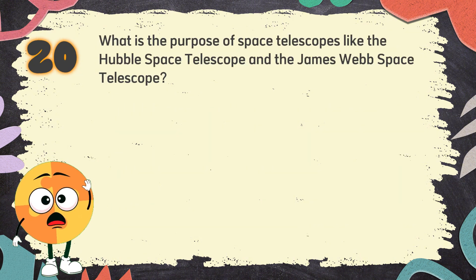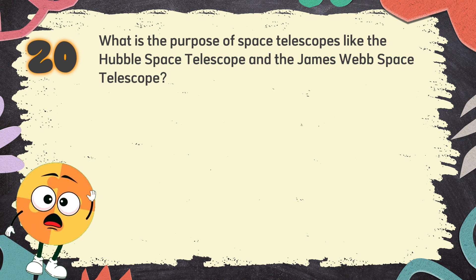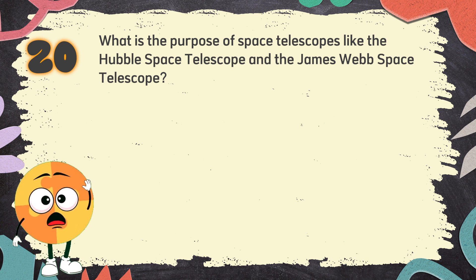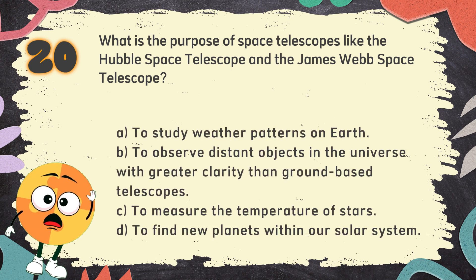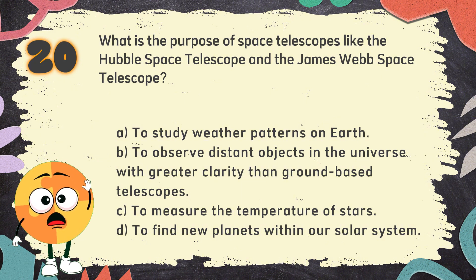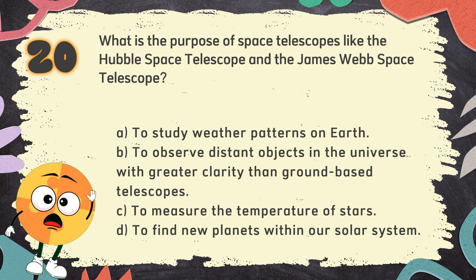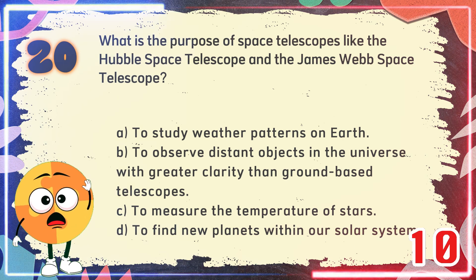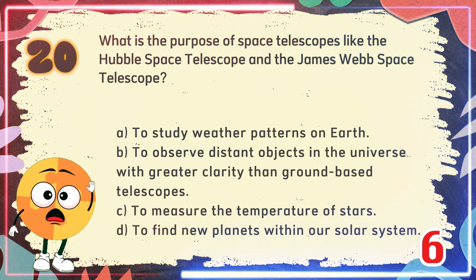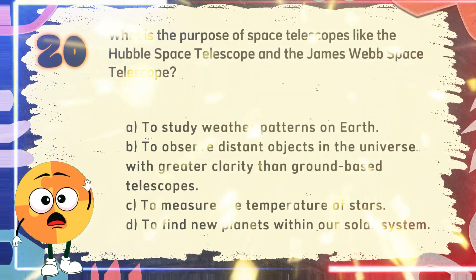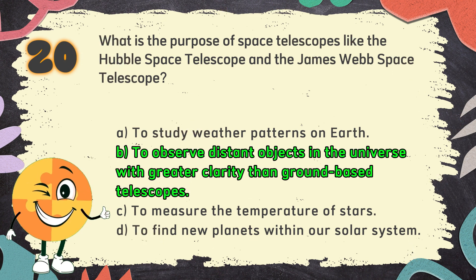Number 20. What is the purpose of space telescopes like the Hubble Space Telescope and the James Webb Space Telescope? The choices are: A. To study weather patterns on Earth. B. To observe distant objects in the universe with greater clarity than ground-based telescopes. C. To measure the temperature of stars. D. To find new planets within our solar system. The correct answer is B: to observe distant objects in the universe with greater clarity than ground-based telescopes.